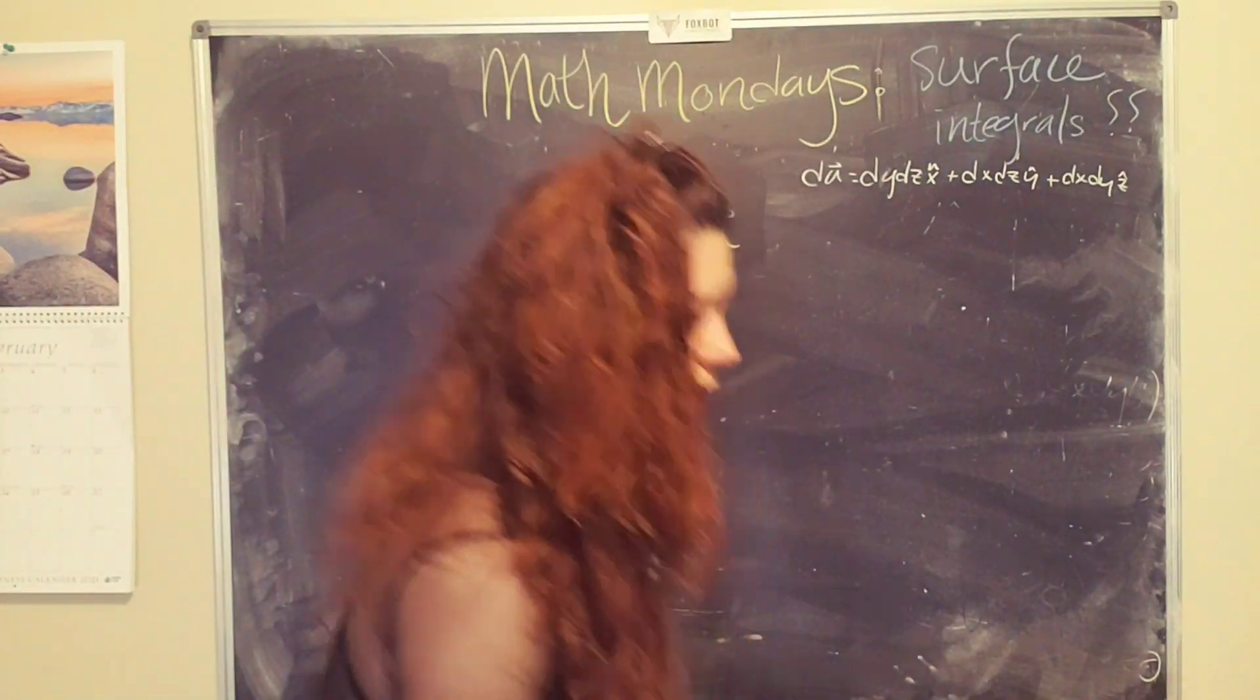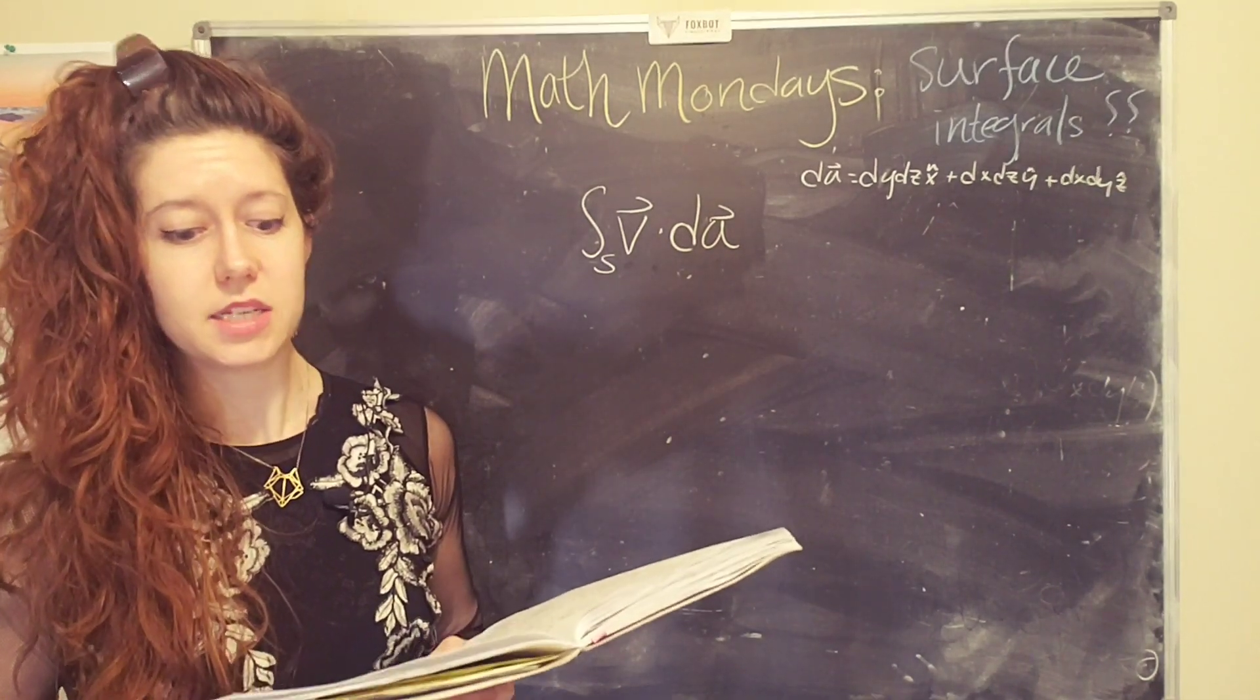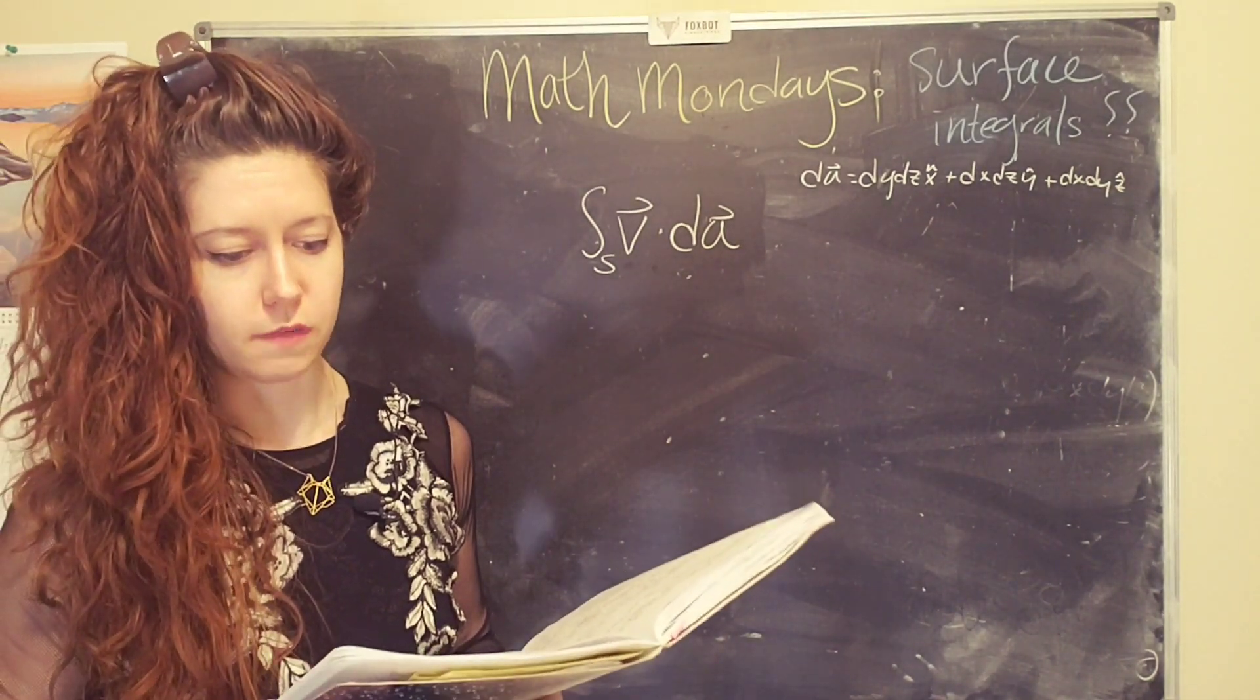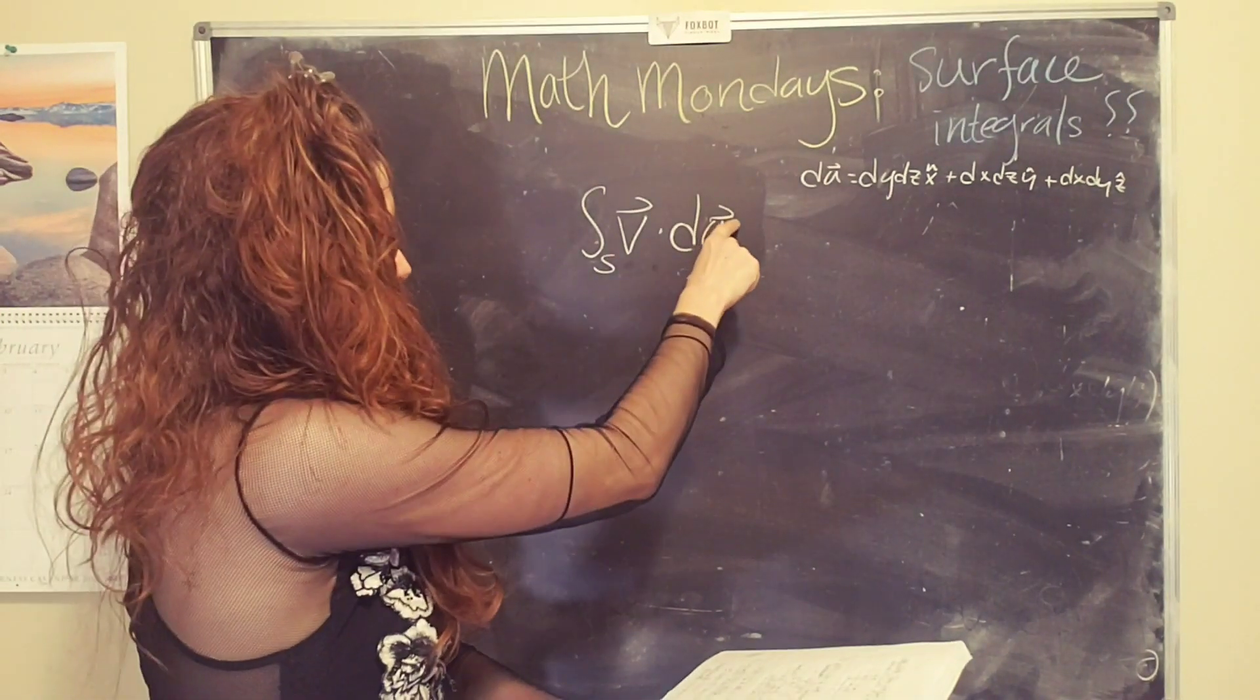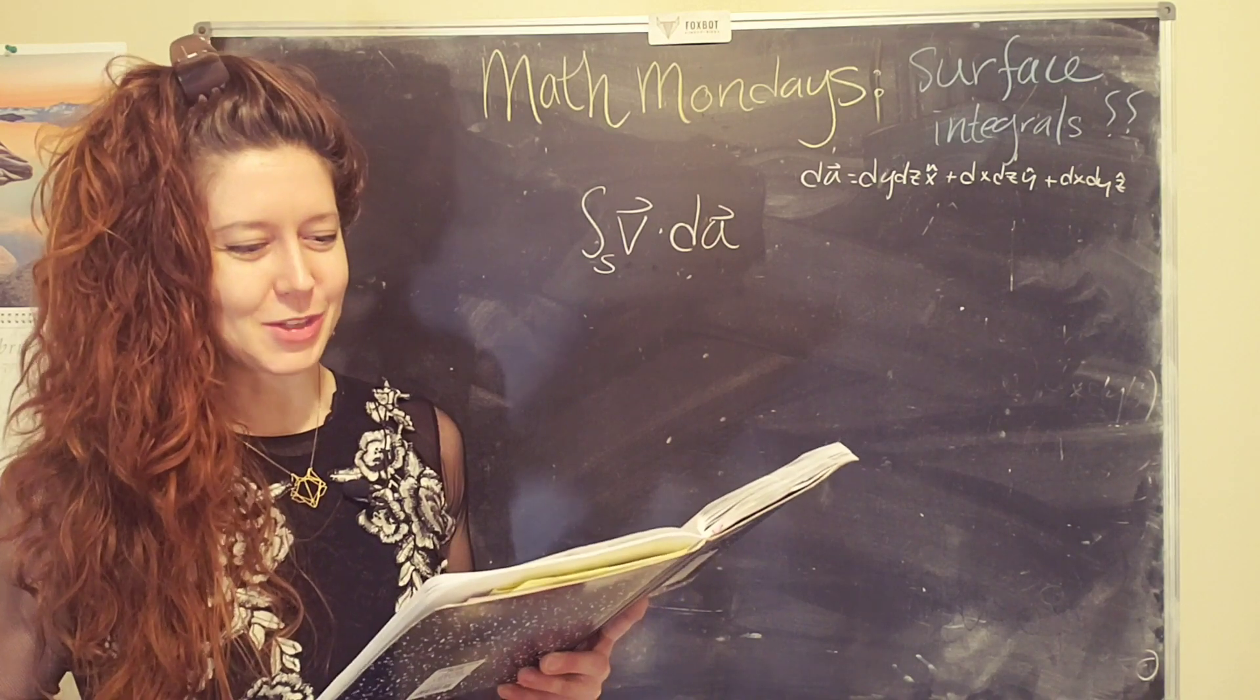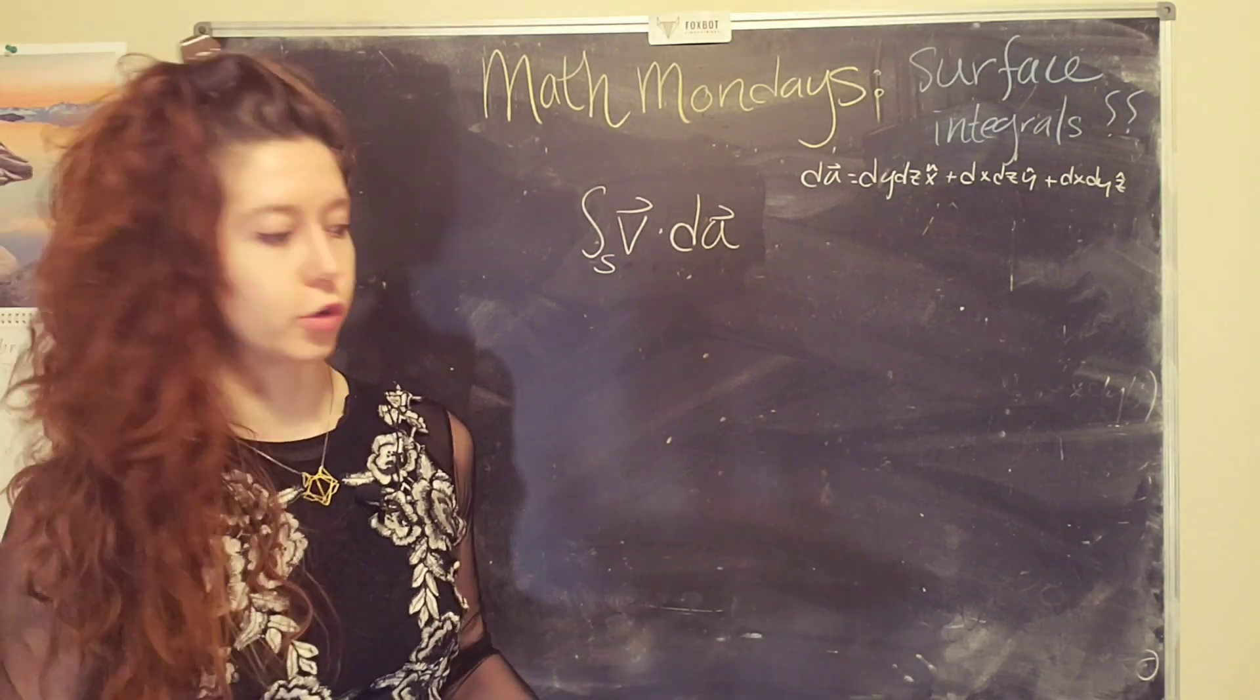And I'm going to grab my notes to make sure I don't define this wrong. dA is the infinitesimal patch of area with a direction. It's a vector. See the little vector hat? Oh, cute. So its direction is perpendicular to the surface.